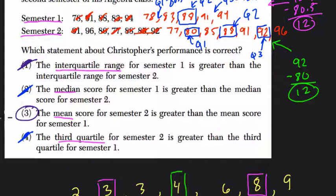So the correct answer is that the mean score for semester 2 is greater than the mean score for semester 1. We could add it and divide to confirm that, but that's exactly what we'll find. All right, thanks.